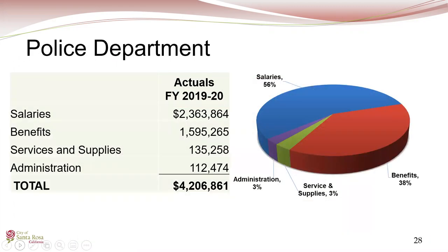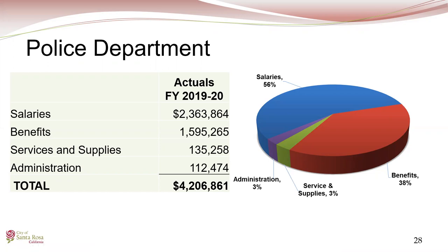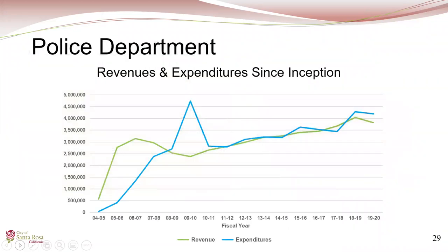The expenditure breakdown shows 94% of funding spent on salaries and benefits. Approximately $135,000 was spent on services and supplies, covering vehicle maintenance and fuel for two downtown enforcement vehicles, lease for the downtown substation, and insurance. An additional $112,000 went to general fund administration fees. A 15-year trend chart shows expenditures steadily increasing, generally keeping pace with revenues, but with periodic dips into reserves when revenues fell short.